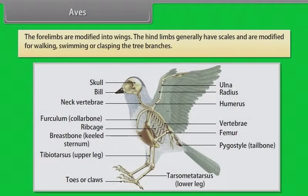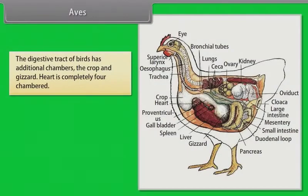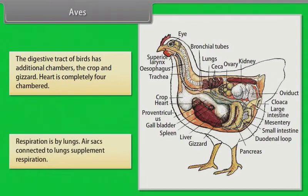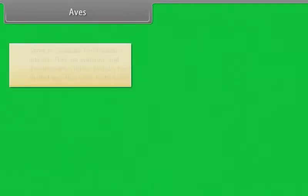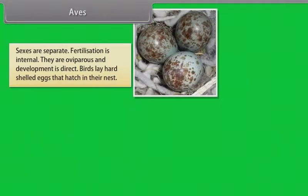The forelimbs are modified into wings. The hind limbs generally have scales and are modified for walking, swimming or clasping tree branches. The digestive tract of birds has additional chambers: the crop and gizzard. Heart is completely four-chambered. Respiration is by lungs. Air sacs connected to the lungs supplement respiration. Sexes are separate. Fertilization is internal. They are oviparous and development is direct. Birds lay hard-shelled eggs that hatch in their nest.